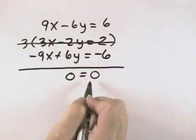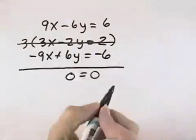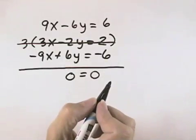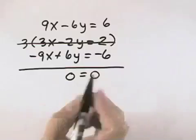Well, 0 always equals 0. What that means is these two equations are always true, no matter which values you choose for x and y. They will always be satisfied.